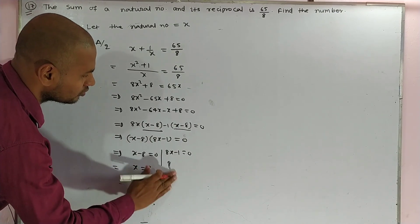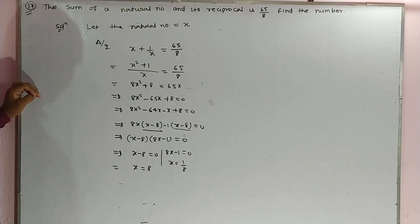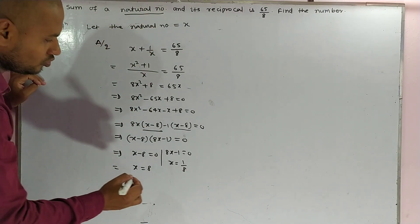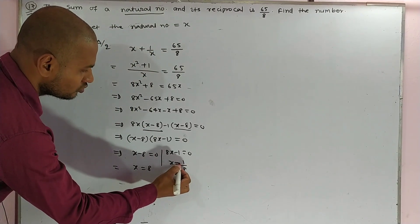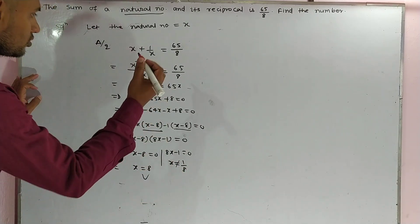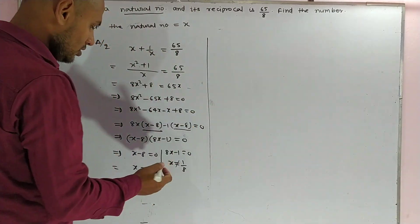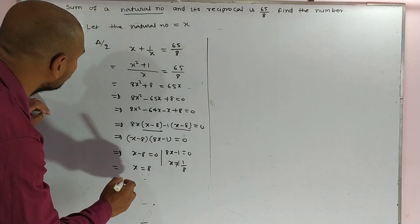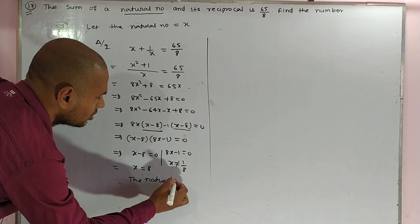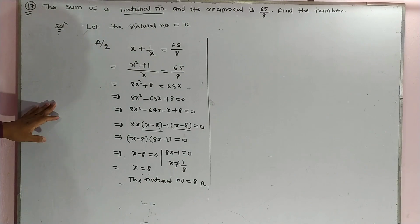From here, x minus 8 equals 0 gives x equals 8, and x minus 1 equals 0 gives x equals 1 upon 8. The question is asking about only a natural number, so 1 upon 8 is not a natural number, therefore x does not equal 1 upon 8. Our answer is x equals 8. The natural number is equal to 8. Thank you very much.